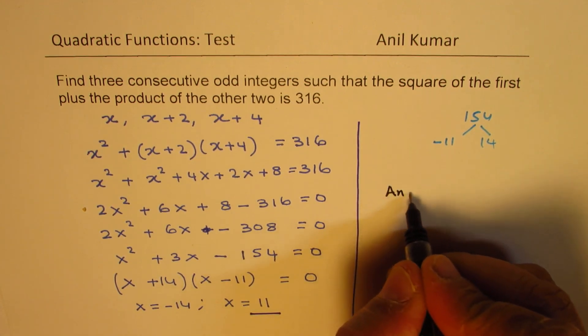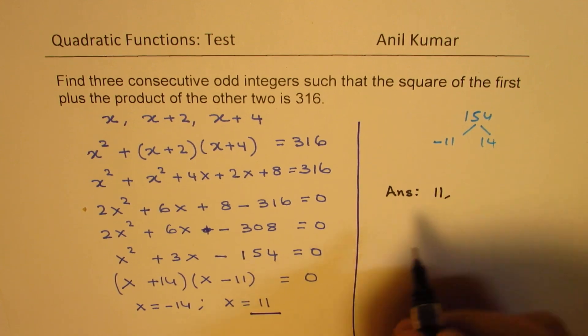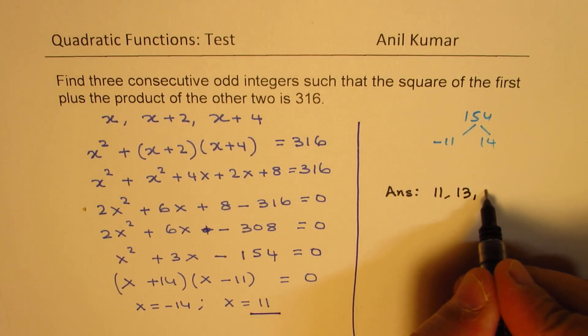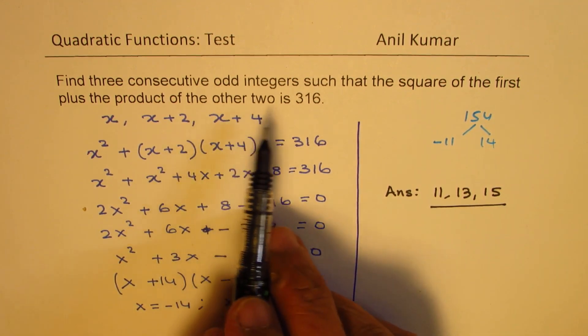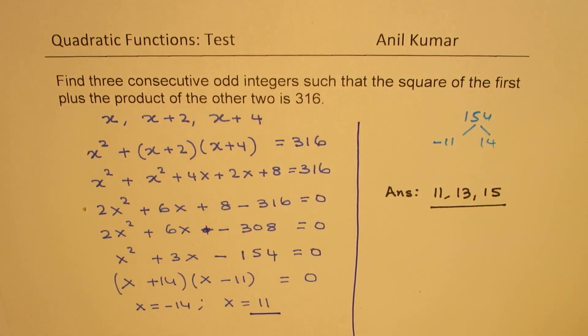So we get our answer, and the answer is 11, 11 plus 2 is 13, and 15. So these are the three integers which will satisfy the given condition.